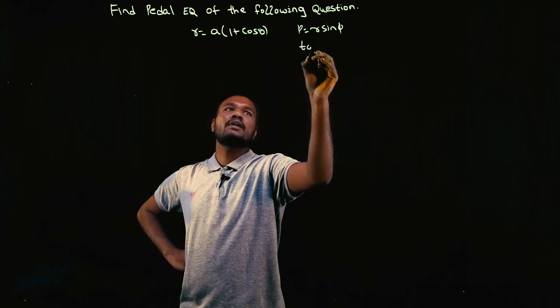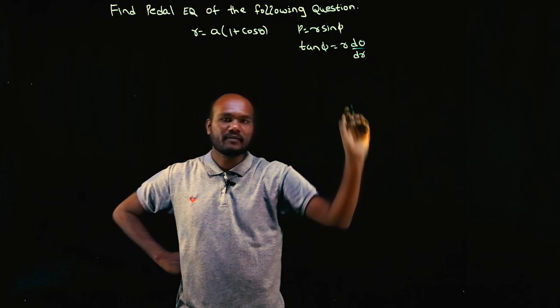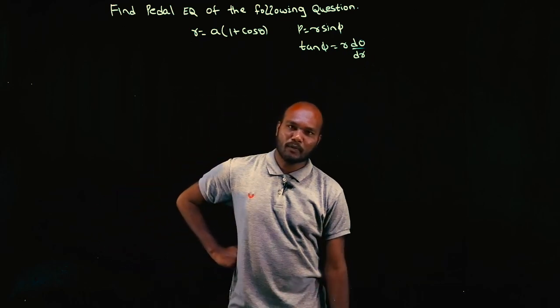So to find phi, what is the formula? Tan phi is equal to R into d theta upon dr.